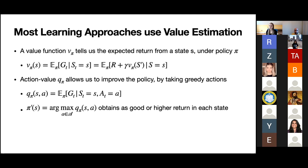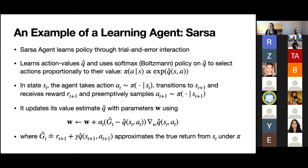The other value estimate we'll need is an action value. An action value says: if I was in a state, took an action, then followed my policy pi, what would be my expected return? Action value functions Q-pi are really important if you want to improve your policy or learn the optimal policy, because if we have Q-pi, we can always get back a better policy by acting greedily according to it.